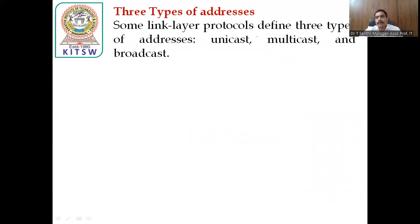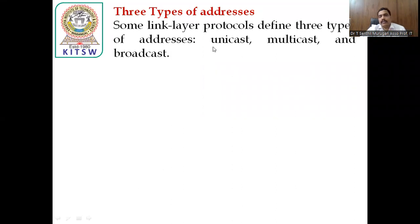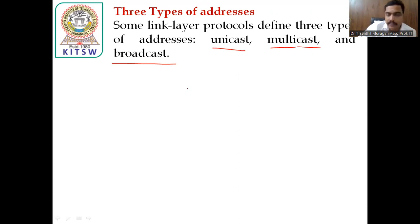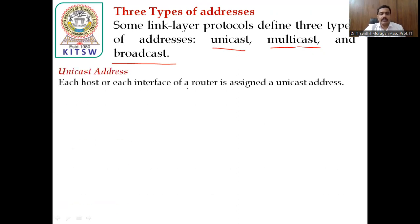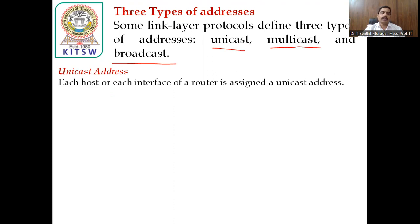There are three types of addresses: unicast address, multicast address, and broadcast. These three have already been discussed in our classes, but I will explain here what is unicasting, multicasting, and broadcasting. First, unicast address: unicast address means each host or each interface of a router is assigned a unicast address. That means source to destination, one node to another node communication — unicasting means one-to-one communication.